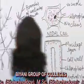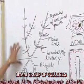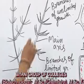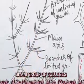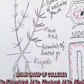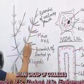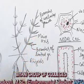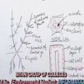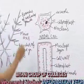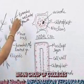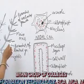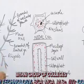If we see the structure of Chara, its main plant body is differentiated into three parts: main axis, lateral branches, and rhizoids. The main axis bears nodes and internodes. At these nodes, branches are present. There are two types of branches in Chara: branches of unlimited growth and branches of limited growth. These branches are also divided into nodes and internodes.